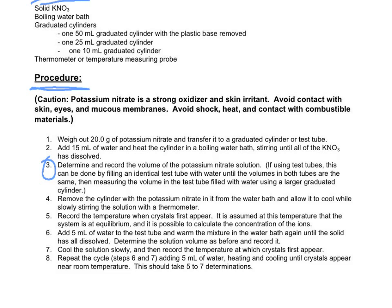Then you're going to stir with a thermometer - step four. Step five says record the temperature when you first see crystals. As it cools down, eventually some of the solid is going to start to recrystallize and precipitate out of the solution. The lab says record the temperature when you first see those crystals appearing. We're assuming that's the temperature the system is at equilibrium - it probably happened a little before we could see the crystals, but this will give us a decent approximation. At that point you know where you're at equilibrium, so you can calculate the concentration of the ions.